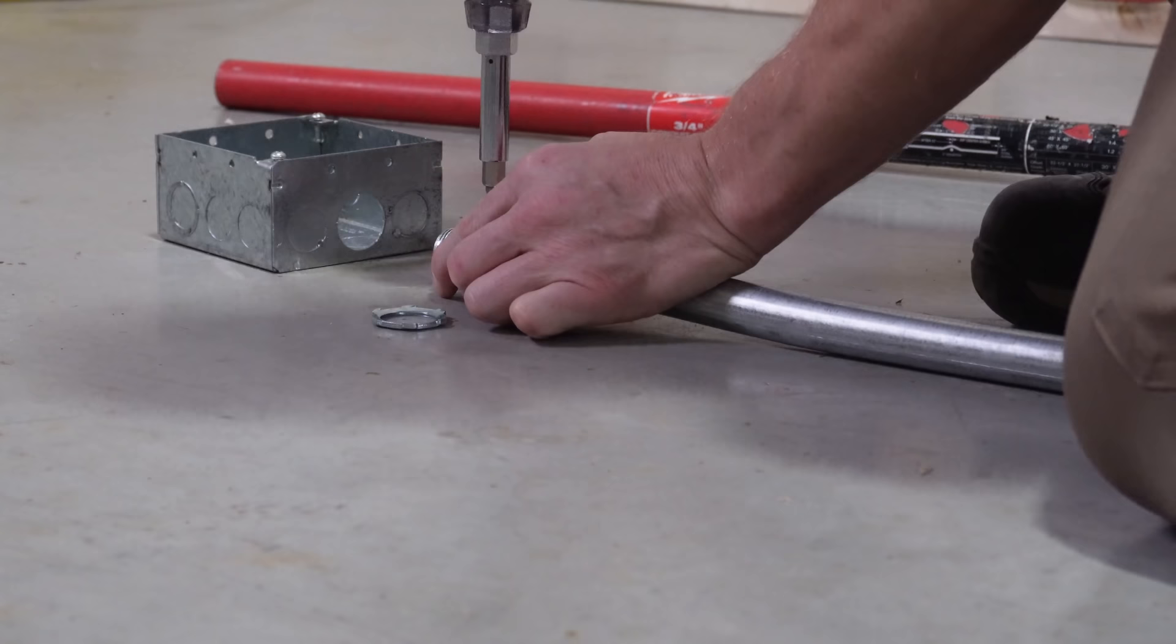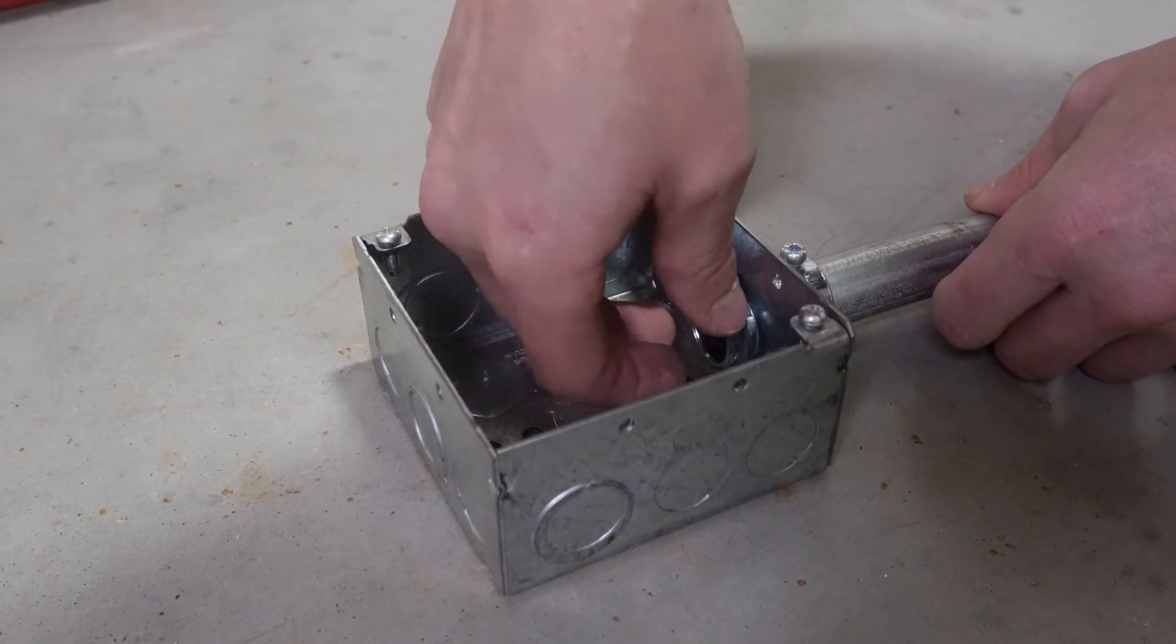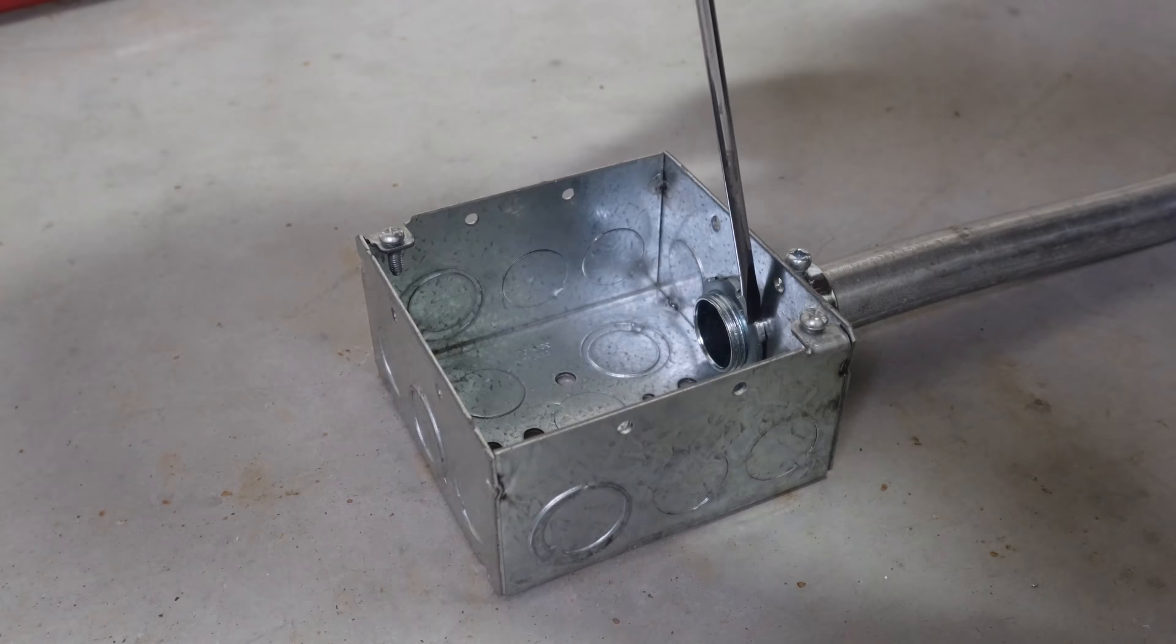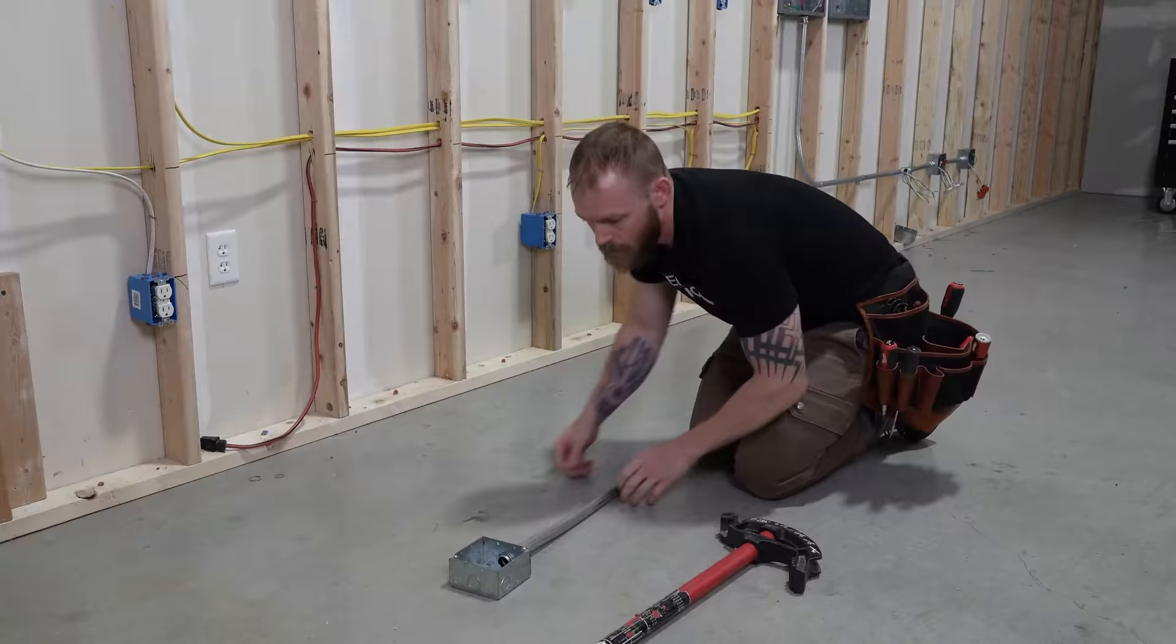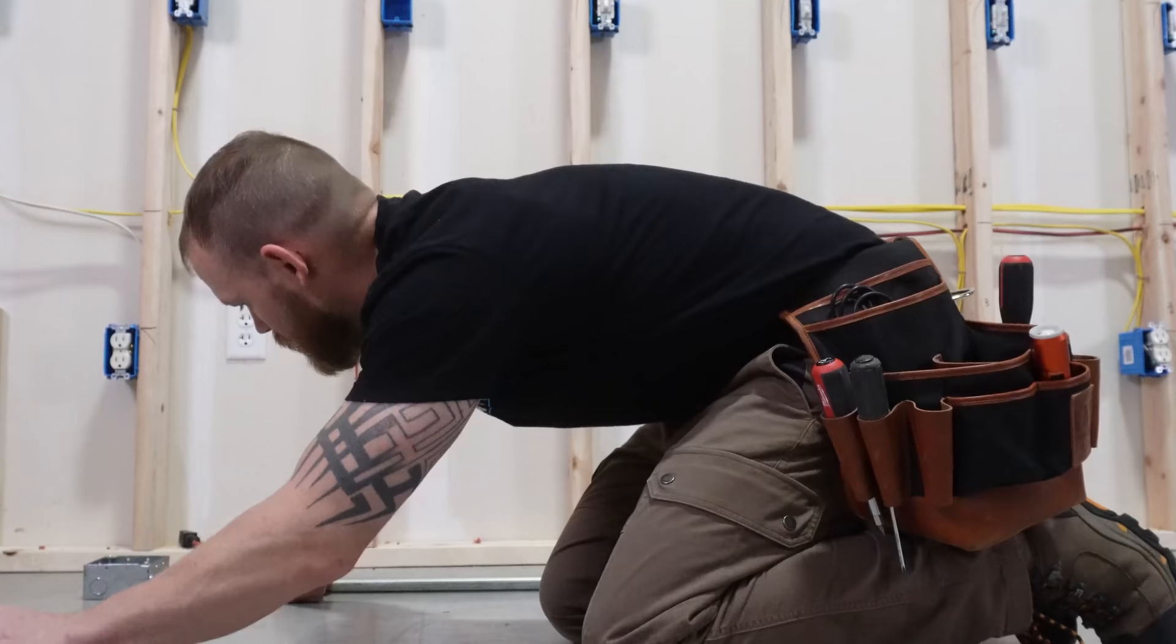And we're going to stick it in there, and the last thing that we do is we take our lock ring and we put it on the threads. Get it finger tight and we're going to take a screwdriver, tighten it up. Now they do make little wrenches and things that stick in here that you could use instead of that. I'm just a fan of using my screwdriver. That's just the way that I do it. You can do it however you want.